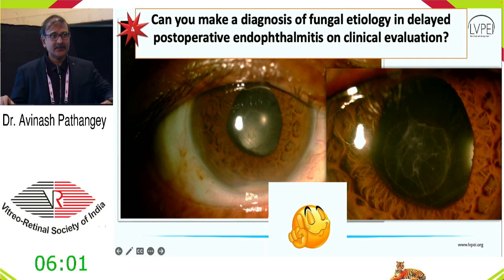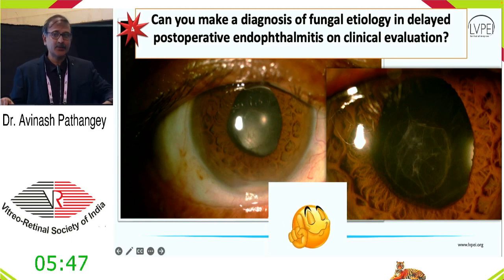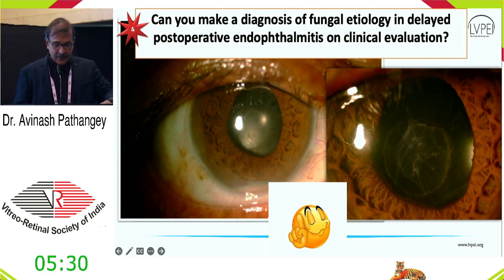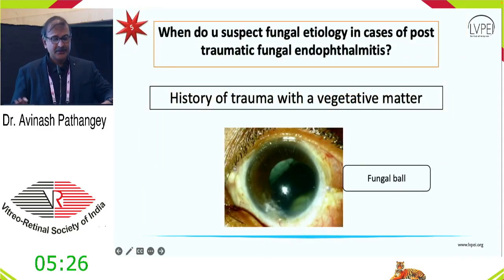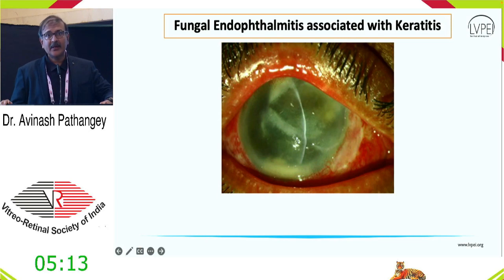Posterior capsular opacification or PC plaque is synonymous with Cutibacterium acnes but is not pathognomonic — it can be seen with other organisms too. Some fungi can be associated with a posterior capsule plaque. So the answer is: no, clinical observations alone cannot identify fungal endophthalmitis on presentation. In trauma cases, clinical suspicion increases if you see a fungal ball or there is a history of vegetable matter injury, but a caveat remains: post-traumatic cases can have polymicrobial infections where fungi co-exist with bacteria.